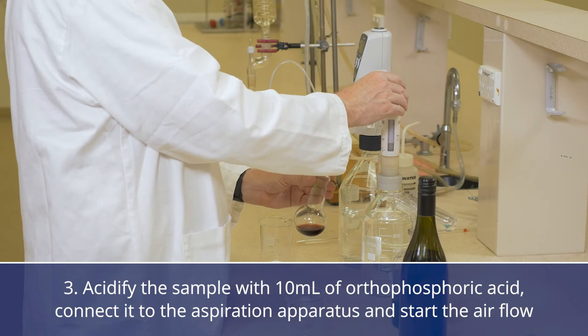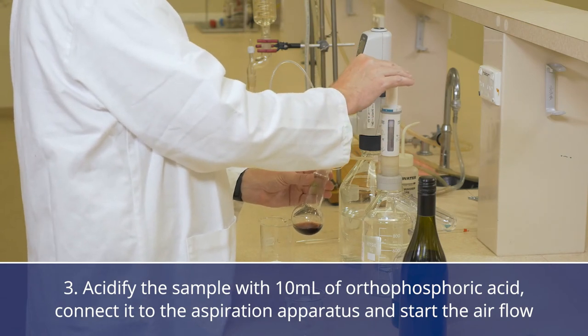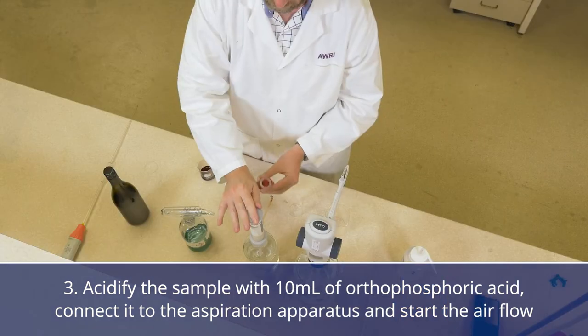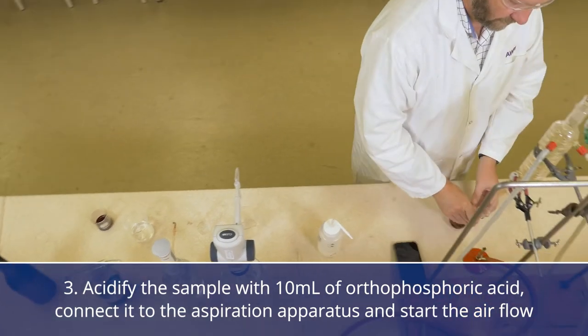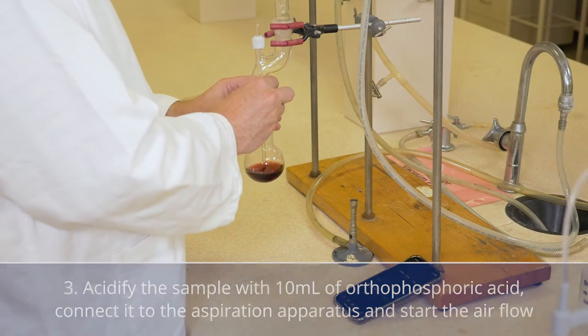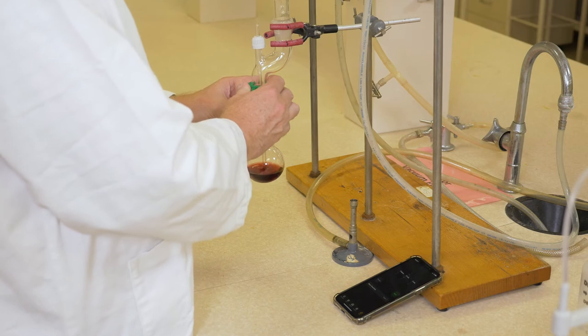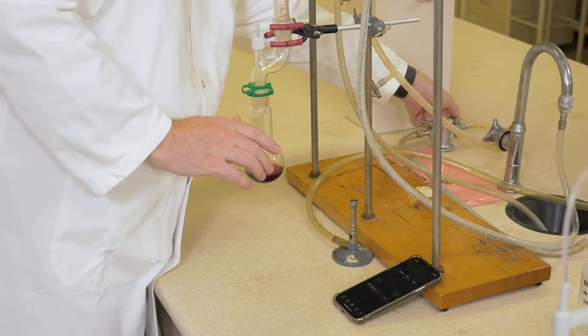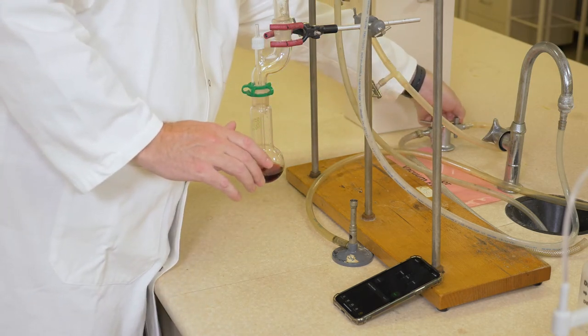Acidify the sample by adding 10 mL of orthophosphoric acid and immediately connect it to the aspiration apparatus and start the airflow. It is important to do this step as quickly as possible to avoid the loss of the volatile sulfur dioxide.